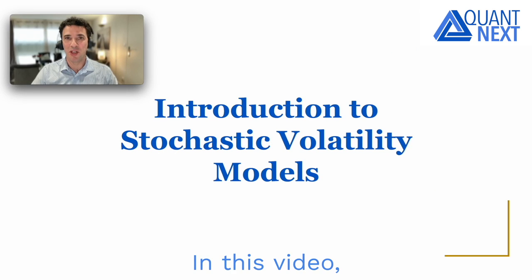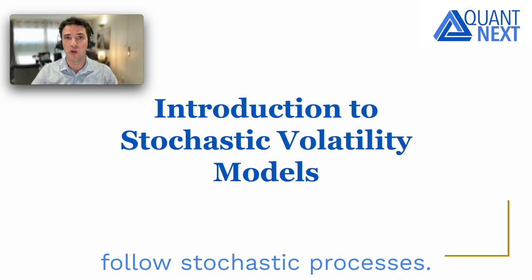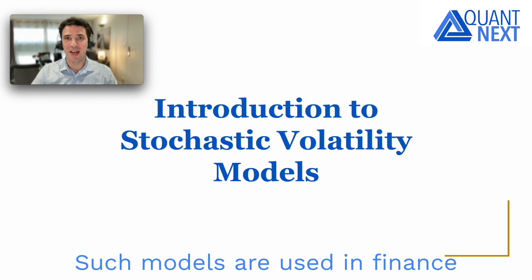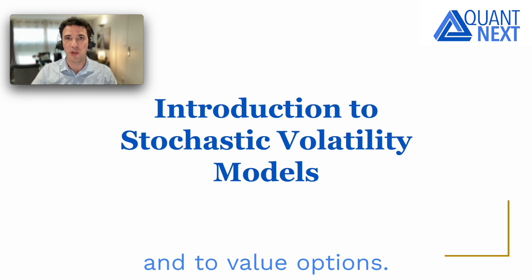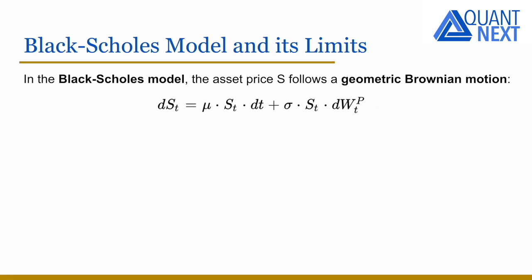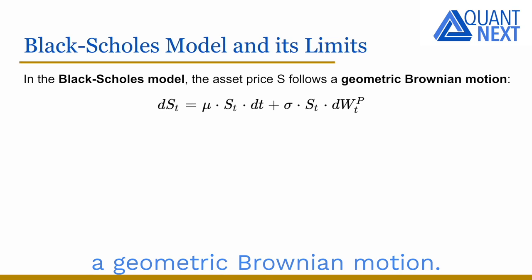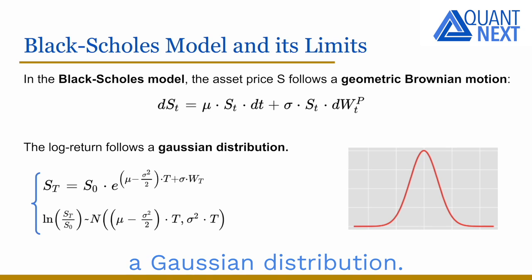Hi everyone. In this video I will introduce stochastic volatility models, which assume that the asset price but also its variance follow stochastic processes. Such models are used in finance to simulate the underlying asset price and to value options. In the famous Black-Scholes model, the asset price follows a geometric Brownian motion and the log return follows a Gaussian distribution.